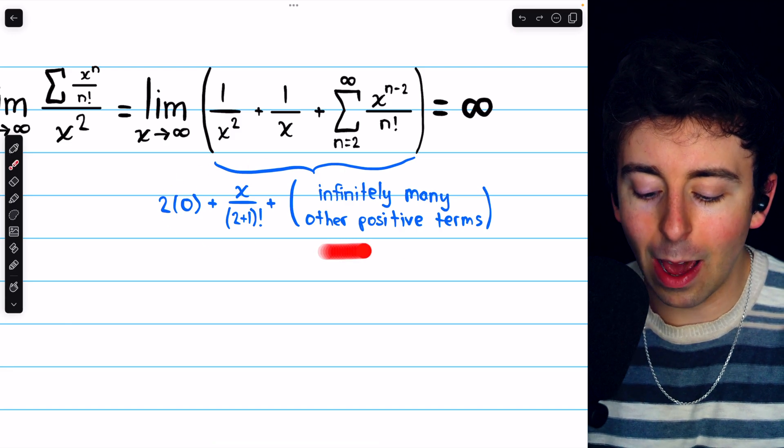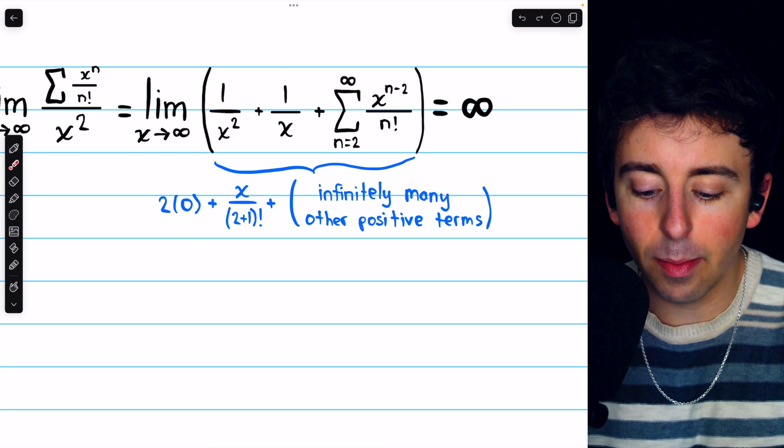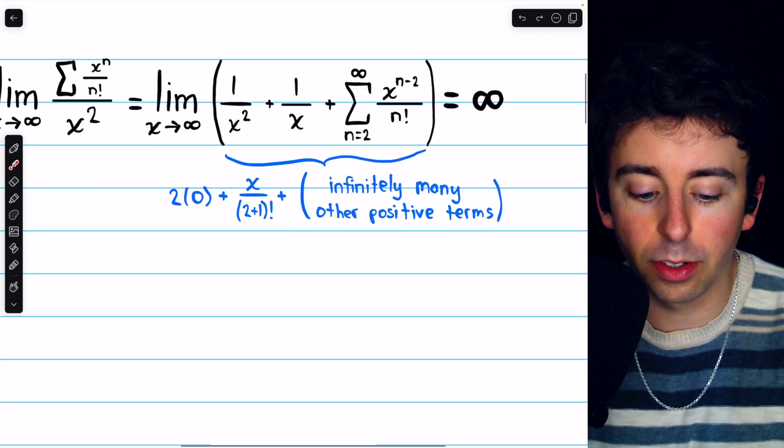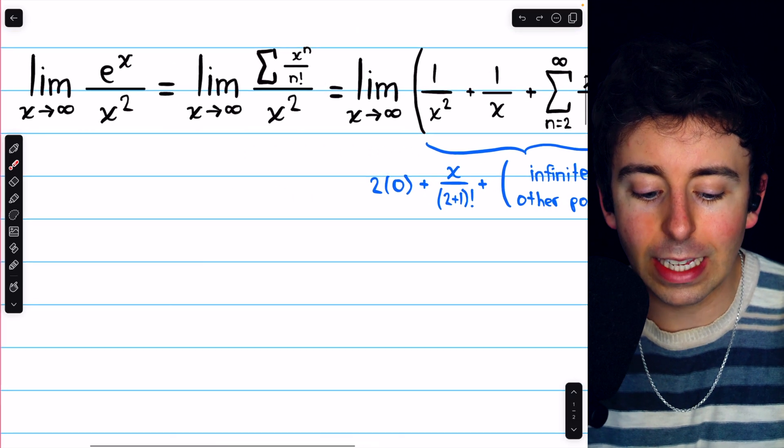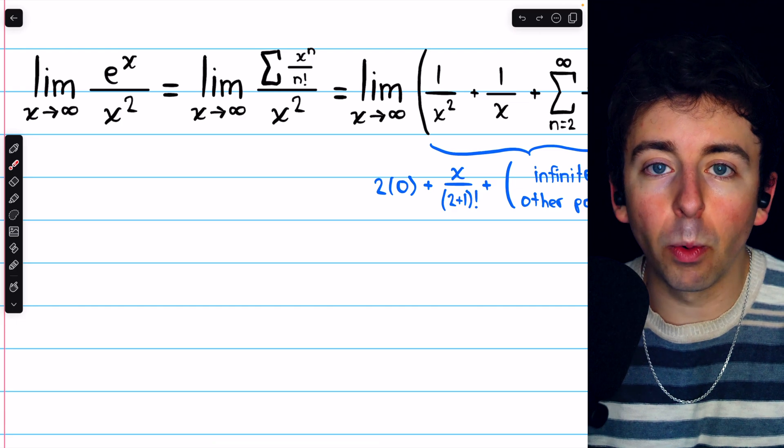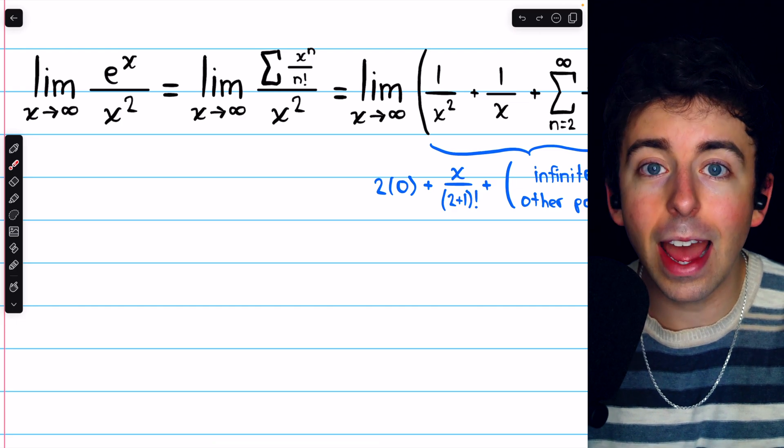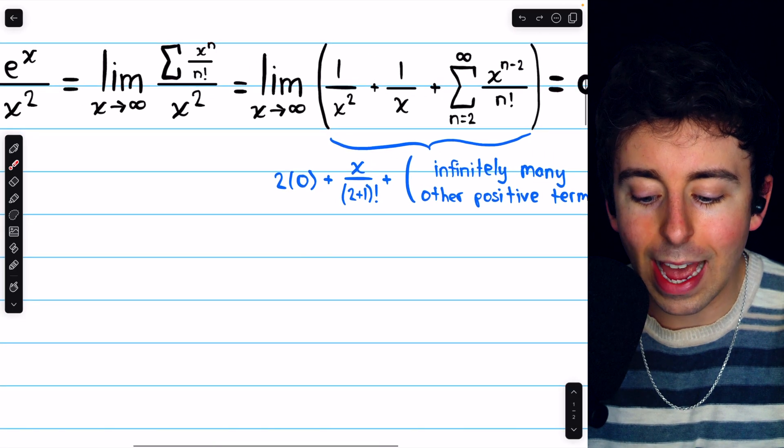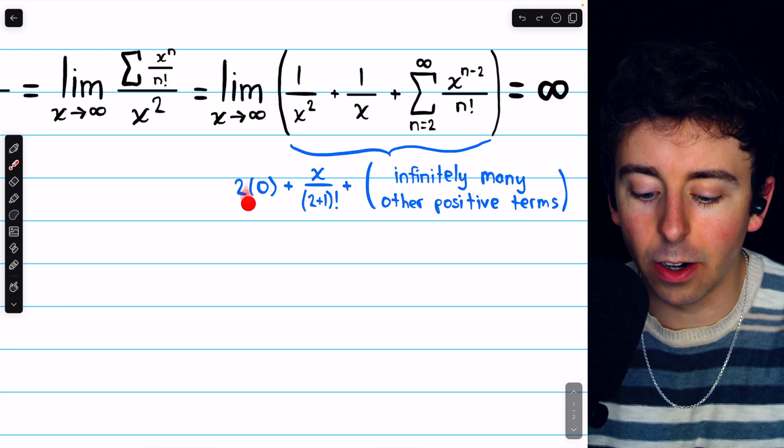Additionally, writing it out like this, we see how this limit would behave for other powers of x. We were considering e to the x over x squared. But if it were x to the power of 10, for example, where we have 2 written here, we would just have 10 instead.